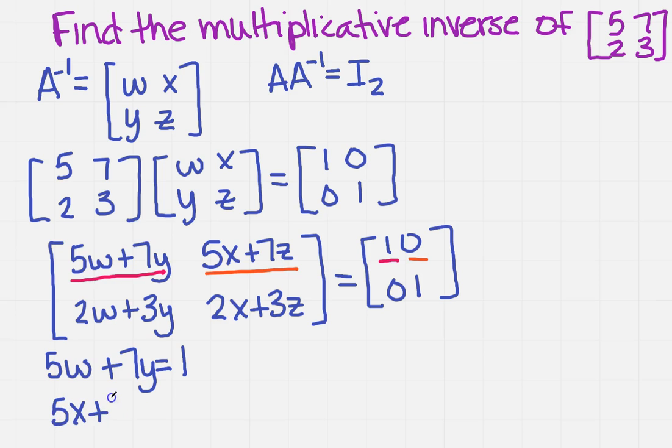5X plus 7Z equals 0. We're going to have a 2W plus 3Y equals 0, and a 2X plus 3Z equals 1.